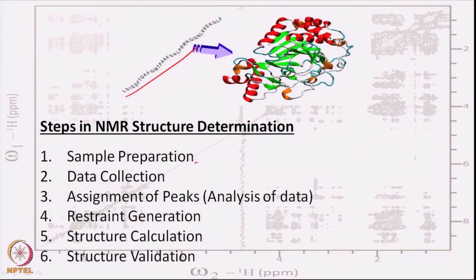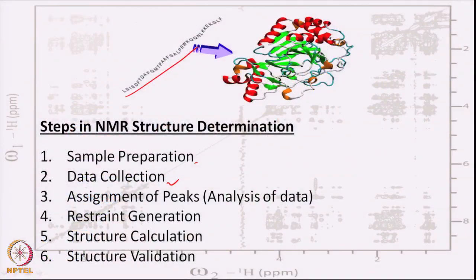Once the sample is prepared, the next step is data collection. We need to collect various sets of NMR data. We need data for sequential resonance assignment: we record COSY, TOCSY, or double-quantum filtered COSY (DQF-COSY). Then we record heteronuclear correlation spectra like 13C-HSQC or 15N-HSQC. Once data is collected, the next step is to assign those data — to identify each peak in the 2D dataset and understand what it means.